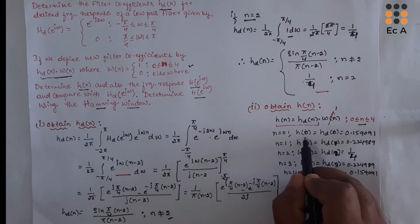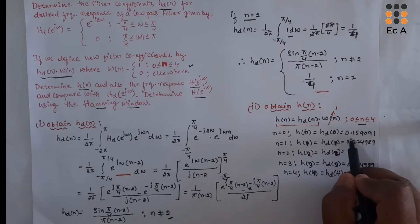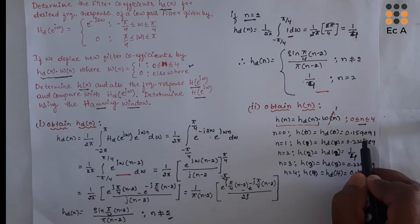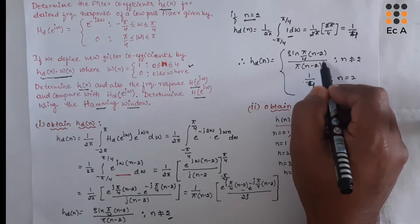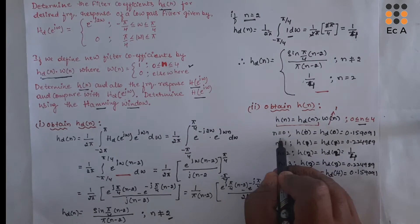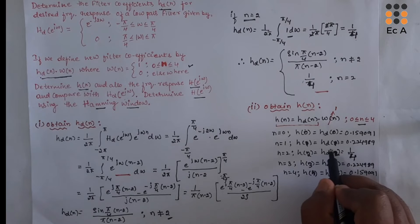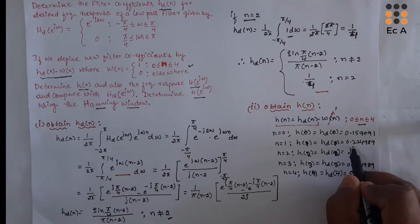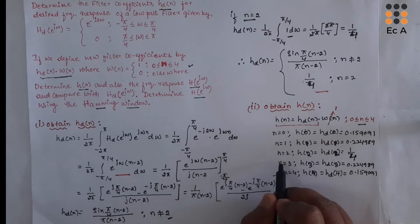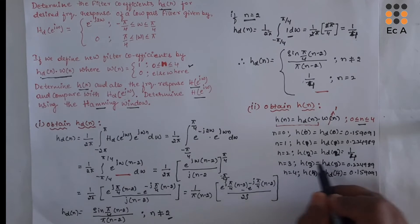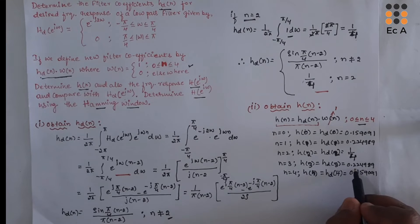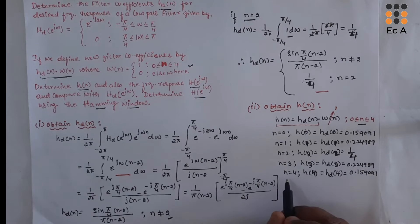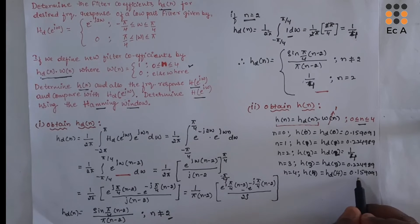We need to find H of N for N ranging from 0 to 4. For N equal to 0, H(0) equals 0.159091. For N equal to 1, H(1) equals 0.224989. For N equal to 2, H(2) equals 1/4 which is 0.25. For N equal to 3, H(3) equals 0.224989. For N equal to 4, H(4) equals 0.159091.